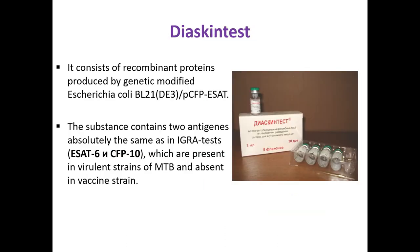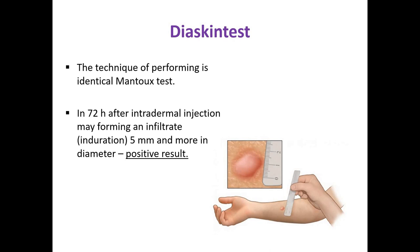The alternate immunologic skin test widely used in Russia is the skin test with tuberculous recombinant allergen. It consists of recombinant proteins produced by genetically modified Escherichia coli. The substance contains two antigens — ESAT-6 and CFP-10 — identical to those used in IGRA tests, which are present in virulent strains of mycobacteria but absent in the BCG vaccine strain. The technique of performing is identical to the Mantoux test. At 72 hours after intradermal injection, forming an infiltrate of 5 mm or more in diameter is a positive result, and we should provide additional tests to decide if there is latent infection or active tuberculosis.